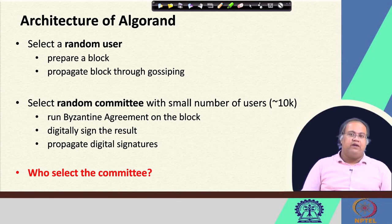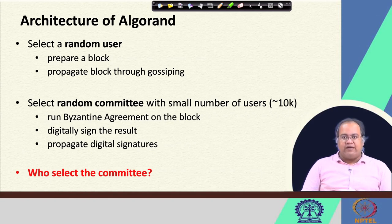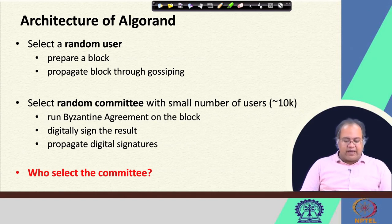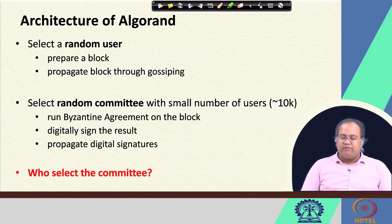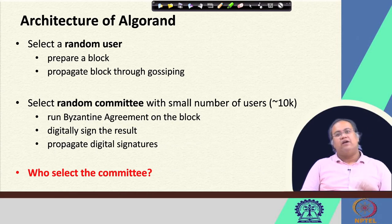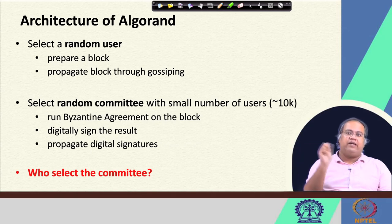To validate the block, we again select a random committee with a small number of users — around say 10,000 users. 10,000 users is small because you are talking about millions of users in the network, so we are not going to use all those millions of users to validate the block; rather, we select a subset. This random committee runs Byzantine agreement on the block proposed by the random user. If they agree on the block's validity, they digitally sign the result using a collective signature, and propagate the digital signature saying this block is valid.